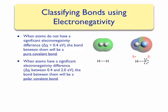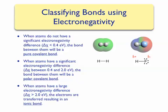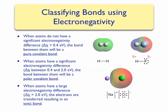When atoms have a very large electronegativity difference — larger than 2 electron volts — the electrons are transferred instead of being shared, resulting in an ionic bond. We know that sodium and chlorine combine to form an ionic compound; the sodium electron is transferred completely to the chlorine due to the very large electronegativity difference. Notice in the electrostatic potential map that almost all the electron density is on the chlorine atom, while the sodium atom has no electron density at all.